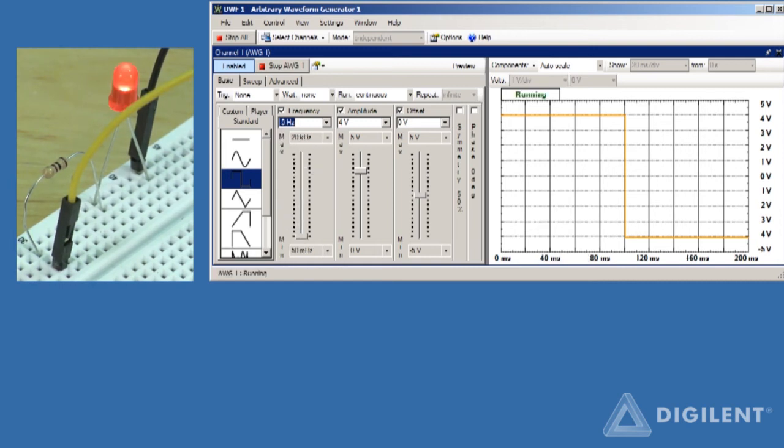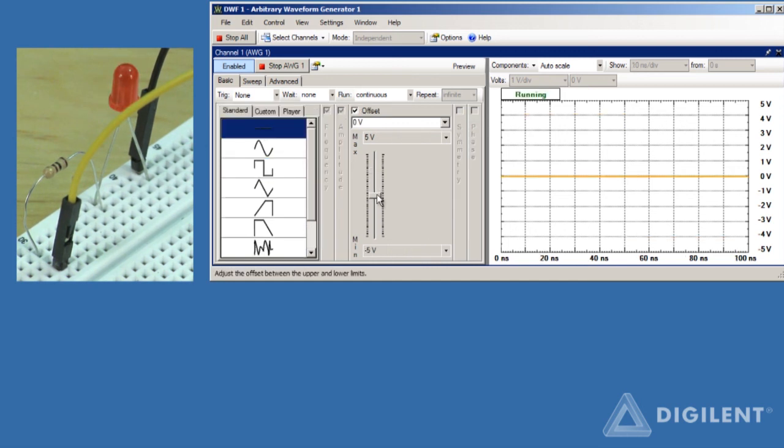We can also check to see at what voltage the LED first turns on by applying a constant voltage and gradually increasing the voltage level until the diode comes on.